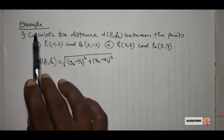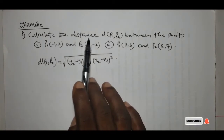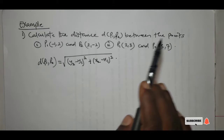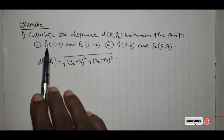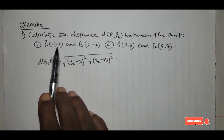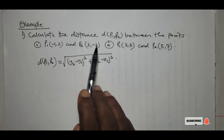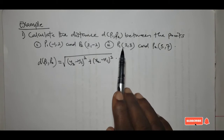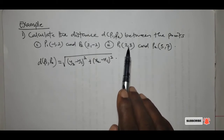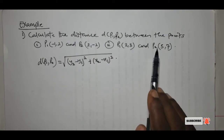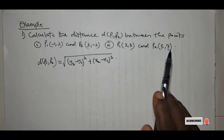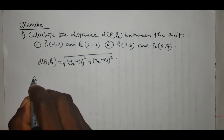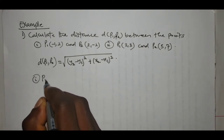We shall look at the following example. Calculate the distance d(P1, P2) between the points: the first point is P1 = (-1, 2) and P2 = (2, -2). The second problem: point P1 is (2, 3) and point P2 is (5, 7).